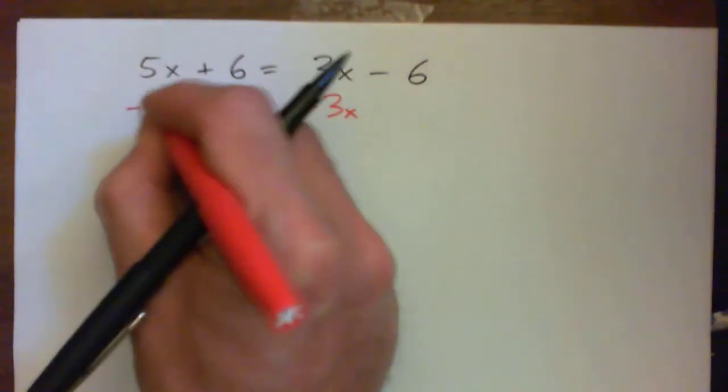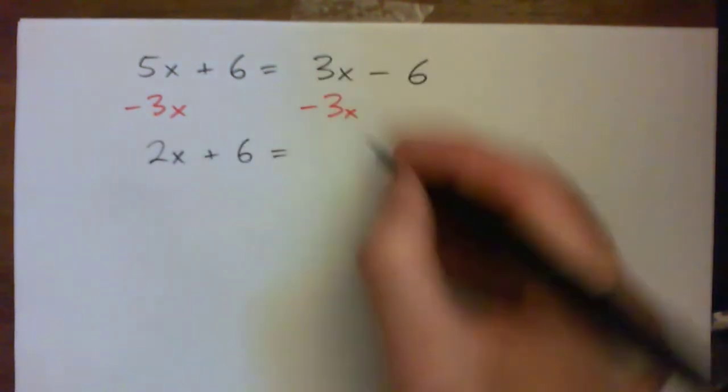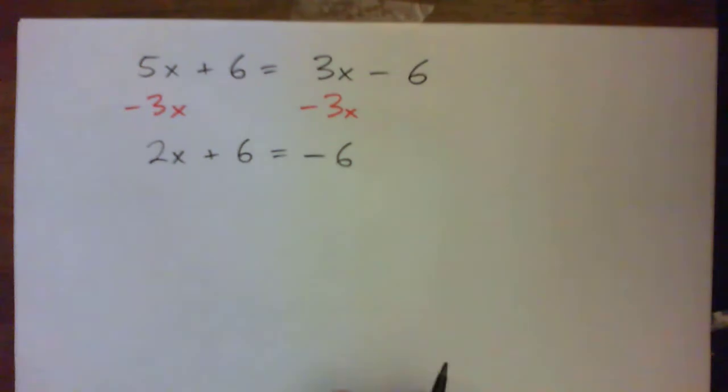I subtracted the 3x from the 5x. Oh, good. Subtract 3x from both sides. Yeah. 2x plus 6 equals negative 6, right?